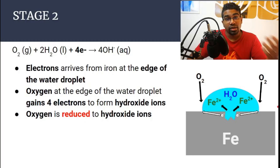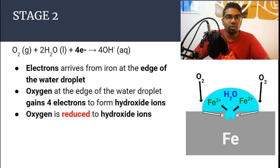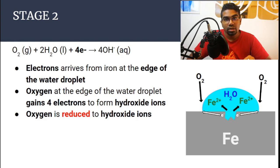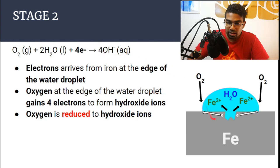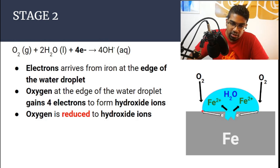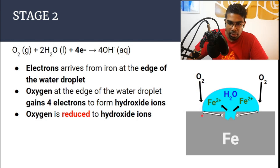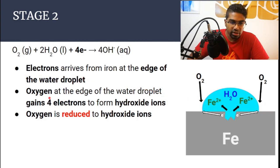Whenever there is an oxidation process and electrons are given away, something else has to accept the electrons. This is where water and oxygen come in. Oxygen will accept the electrons in the presence of water to form hydroxide ions. The electrons originated from the center of the water droplet and are now moving towards the edge, where there is an abundance of oxygen. Oxygen accepts the electrons at the edge of the water droplet.